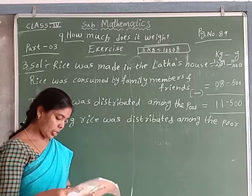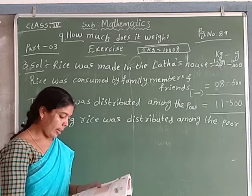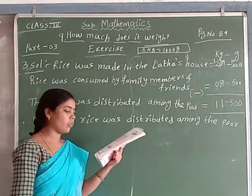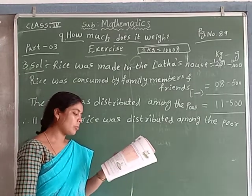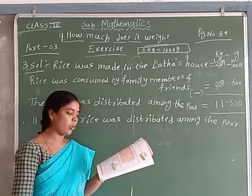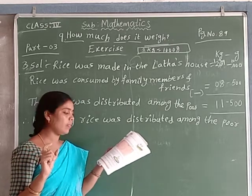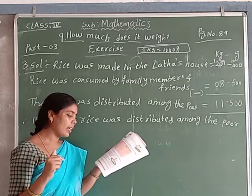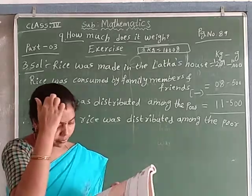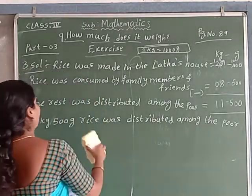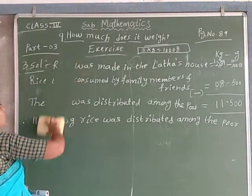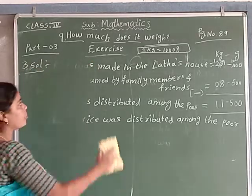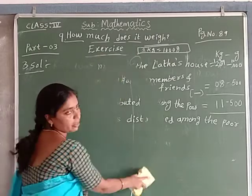Next question, fourth one. A boat can carry 200 kilograms weight. If the weight of the people in the boat is 112 kilograms, how much more weight can the boat carry? A boat can carry 200 kilograms of weight, and the weight of the people in the boat is 112 kilograms. How much more weight can the boat carry? Write the solution. Are you committed to this? Okay, now fourth question.